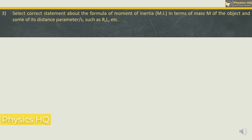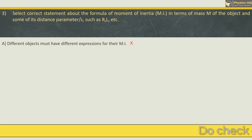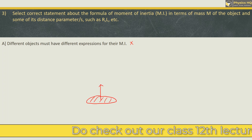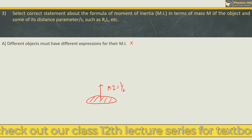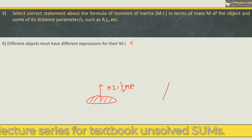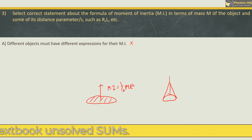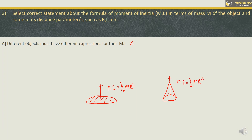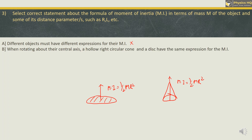Let us check out the next MCQ: select the correct statement about the formula of moment of inertia in terms of mass and parameters such as radius and length. The first option — different objects must have different expressions for their moment of inertia — is incorrect. For a uniform disc about a transverse axis, moment of inertia is half mr squared, and similarly for a hollow right circular cone it is also half mr squared. The next statement, that when rotating about their central axis a hollow right circular cone and a disc have the same expression for moment of inertia, is correct.